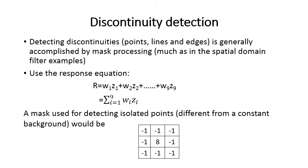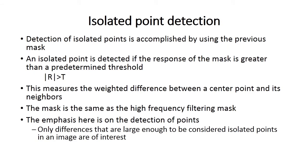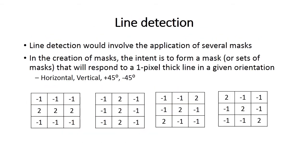A mask used for detecting isolated points different from a constant background is defined by a specific matrix. Isolated point detection is accomplished using this mask. An isolated point is detected if the response of the mask is greater than a predetermined threshold T, i.e., |R| > T. This measures the weighted difference between a center point and its neighbors. The mask is the same as a high-frequency filtering mask. The emphasis here is on detecting only those points where differences are large enough to be considered isolated.